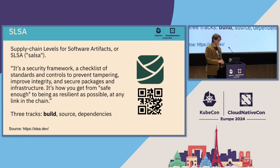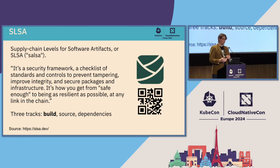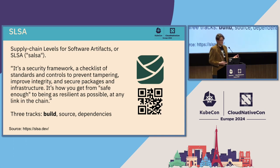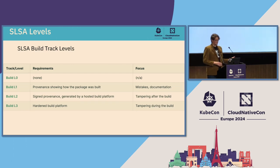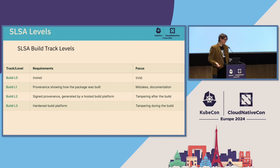SALSA stands for Supply Chain Levels for Software Artifacts. It's a security framework that gives you a reference to describe the level of trust in your build process or entire software development lifecycle. SALSA defines three tracks: one for build, one for source, and one for dependencies. The only one fully implemented by the specification so far is the build track, which is what we're looking at today. For each track there are several levels. Level zero means no requirements at all — every build system is SALSA level zero compliant.